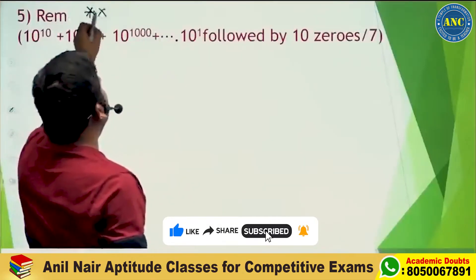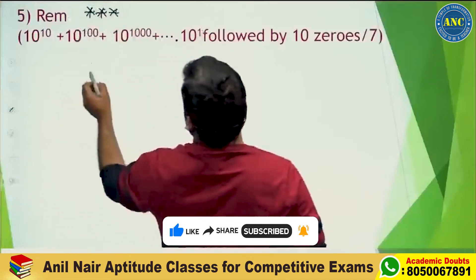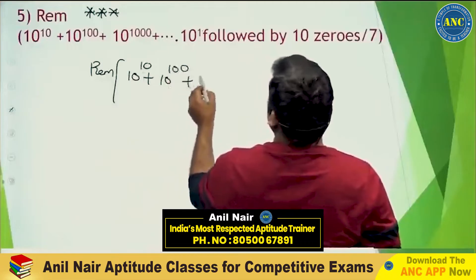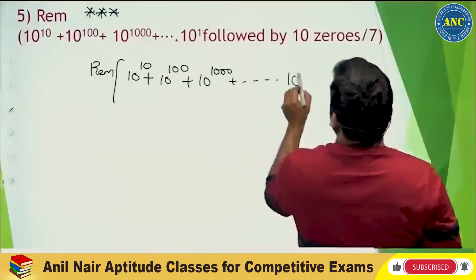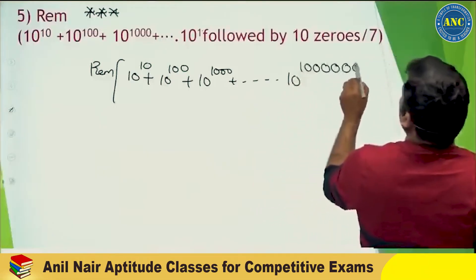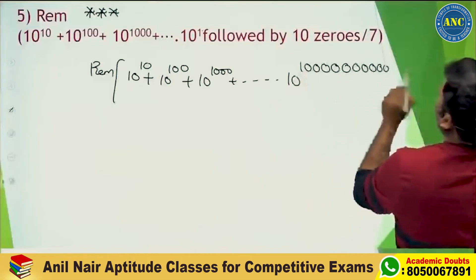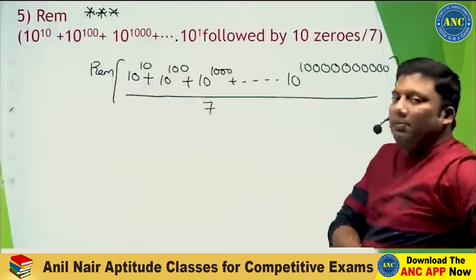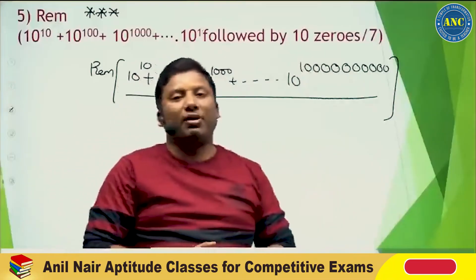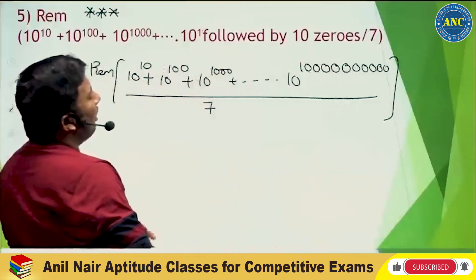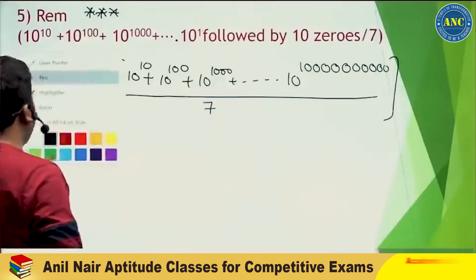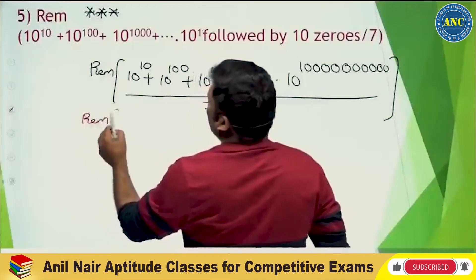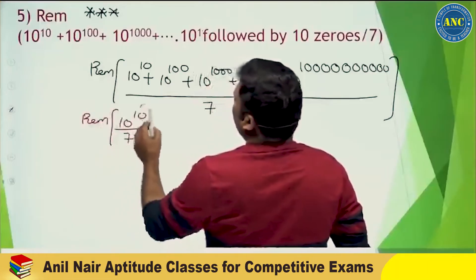Beautiful question: find the remainder when 10^10 + 10^100 + 10^1000 + 10^(10^4) + 10^(10^5) + ... up to 10^(1 followed by 10 zeros) is divided by 7. Let us see if there is any pattern. Starting with the first term, 10^10 divided by 7.